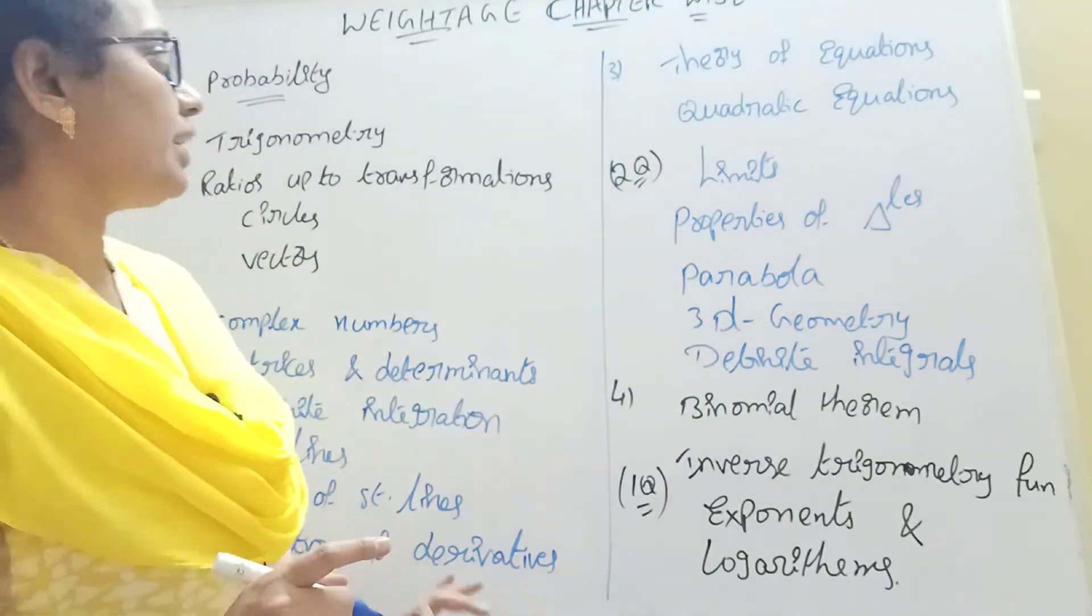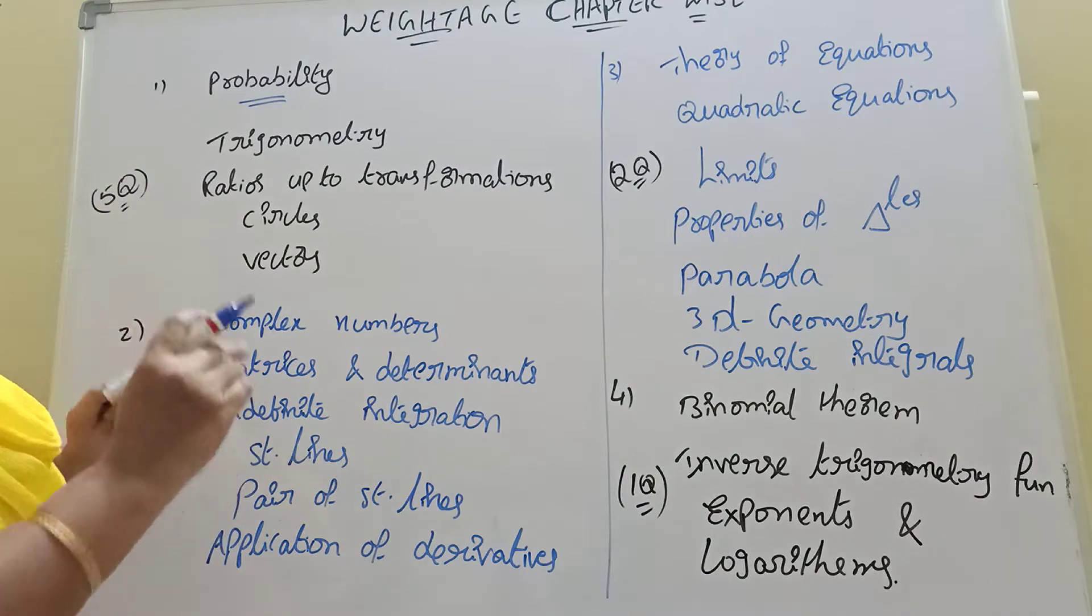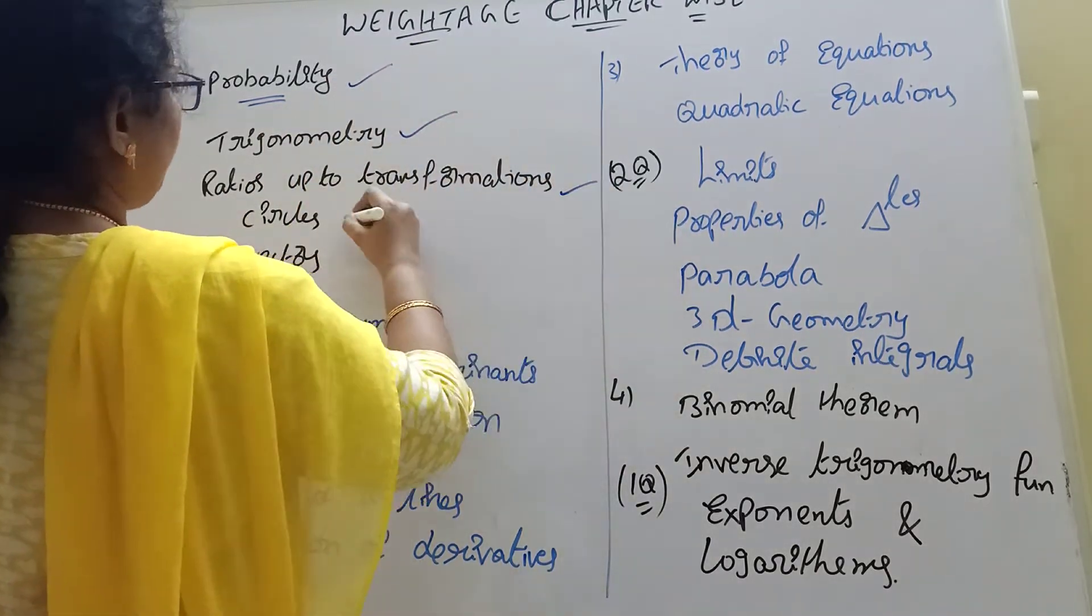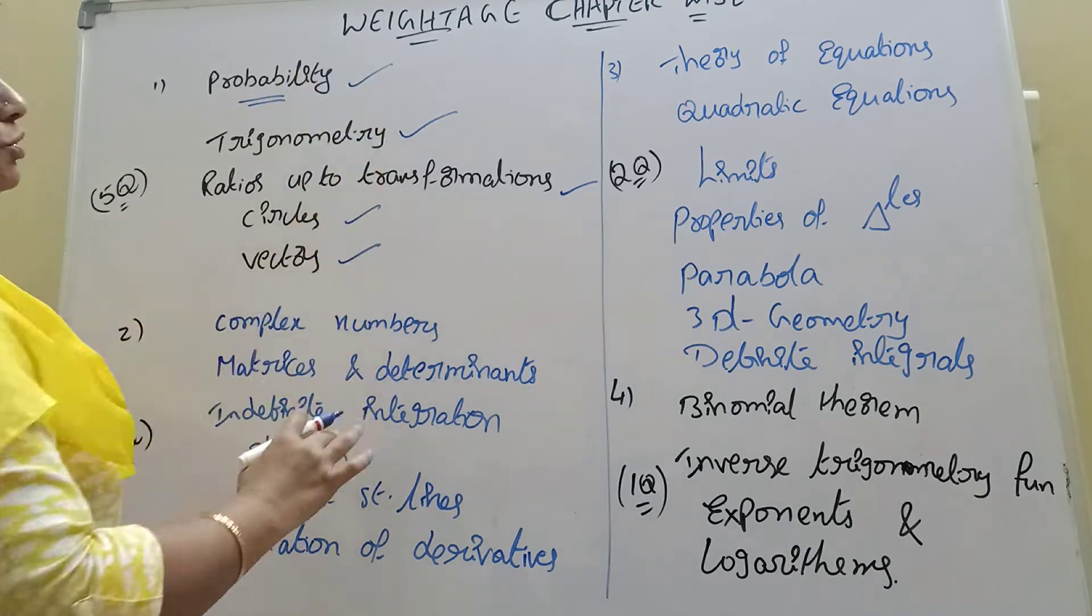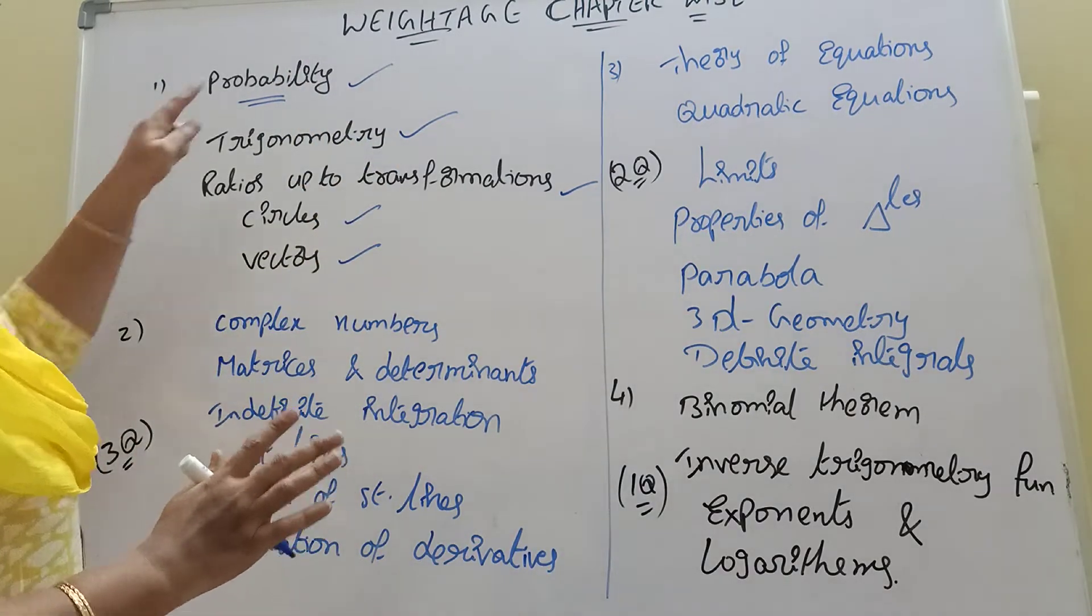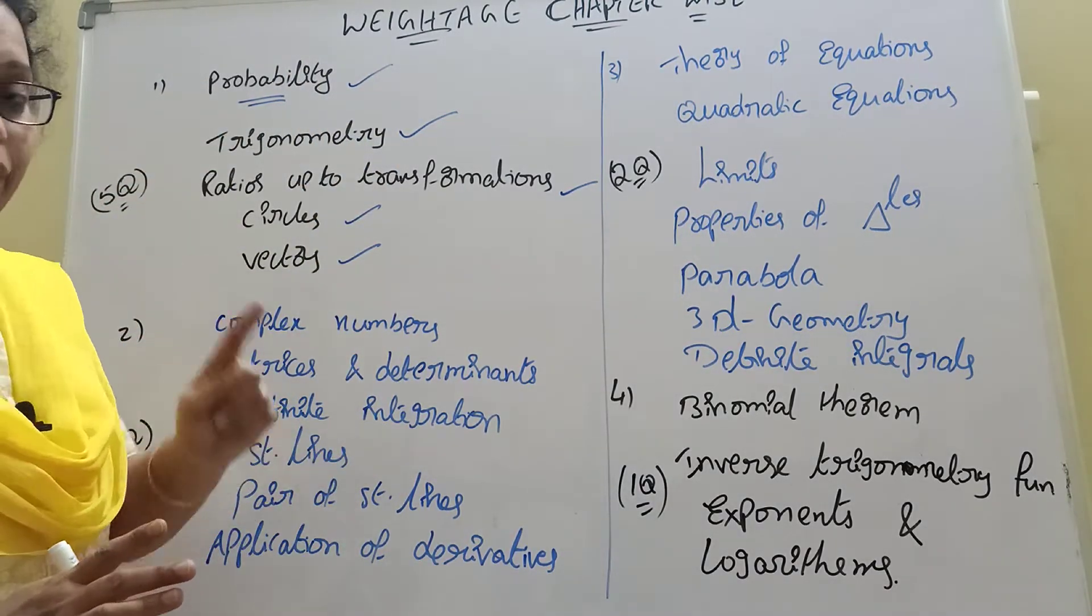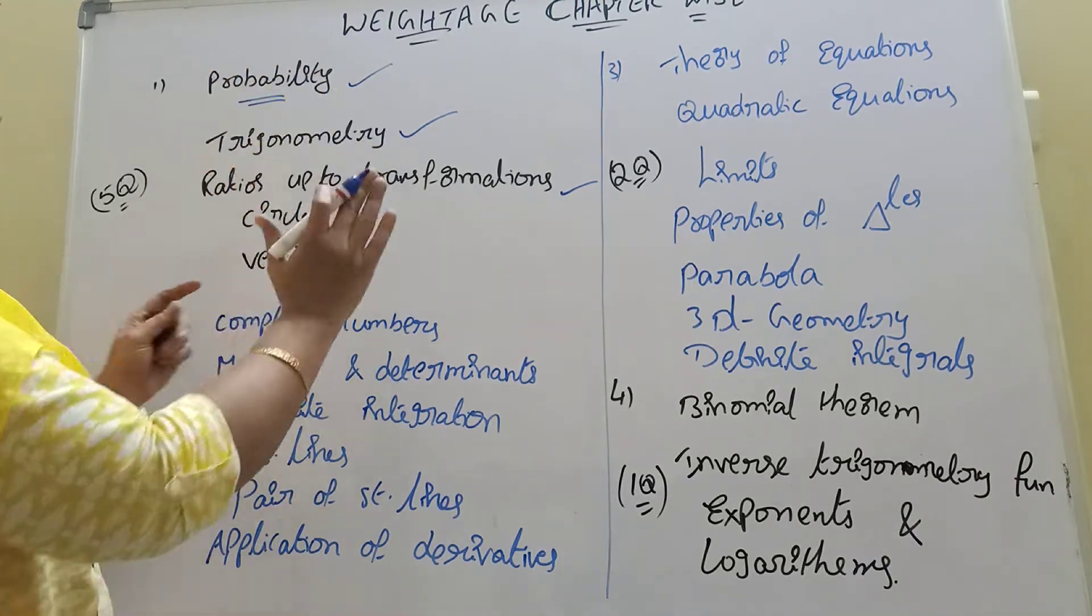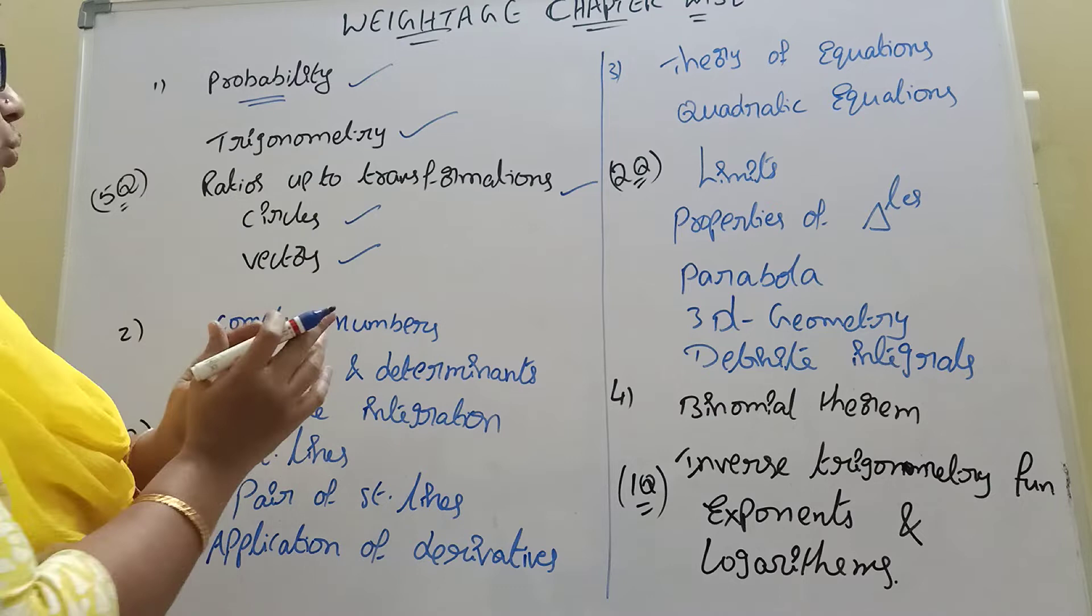So I will give them chapter 1, 2, 3, 4, 5. In these five chapters, 5-5 is 20, that's out of 80. If you ask me, my class focuses on probability, trigonometry, and rest of the transformations.